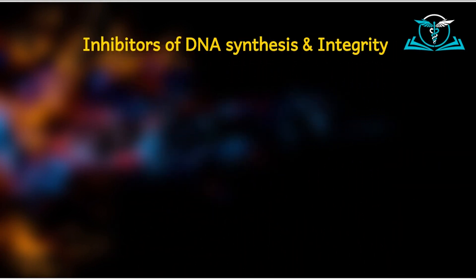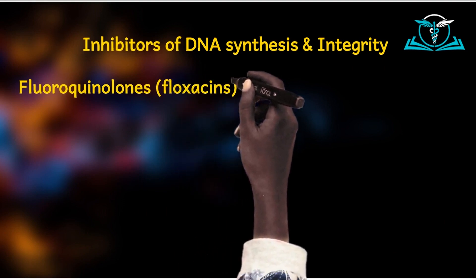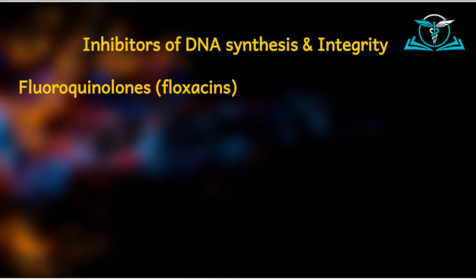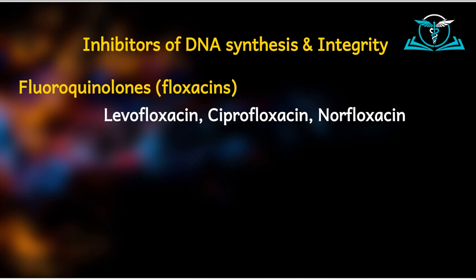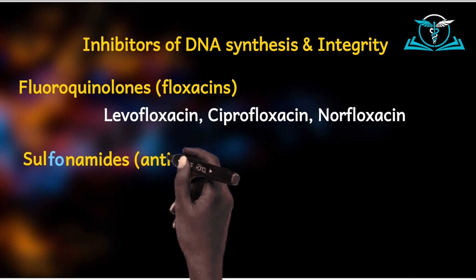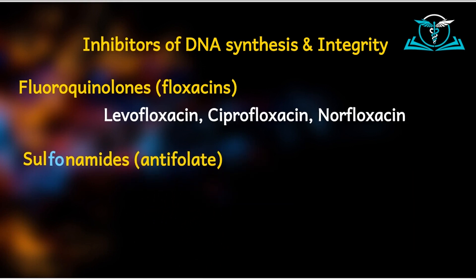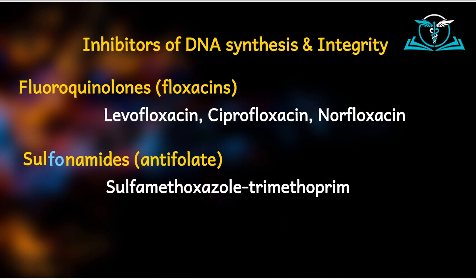Apart from the protein synthesis inhibitors, we have the inhibitors of DNA synthesis or DNA integrity, and there are two. The first group are the fluoroquinolones. Their mechanism of action — they inhibit DNA synthesis, and they end in '-floxacin'. Examples include levofloxacin, ciprofloxacin, and norfloxacin. Then we have sulfonamides. They are antifolates — I intentionally put the 'fo' in blue to highlight that they are antifolates. Folate is needed in the synthesis of DNA, so sulfonamides are antifolates and they inhibit DNA synthesis. The example here is sulfamethoxazole-trimethoprim, where sulfamethoxazole is the sulfonamide.